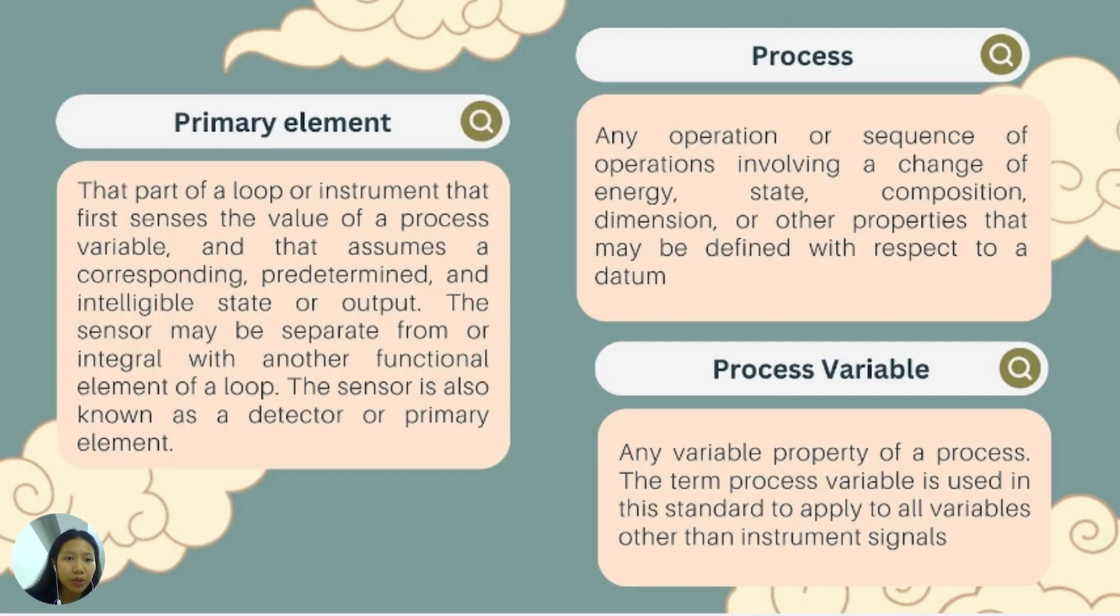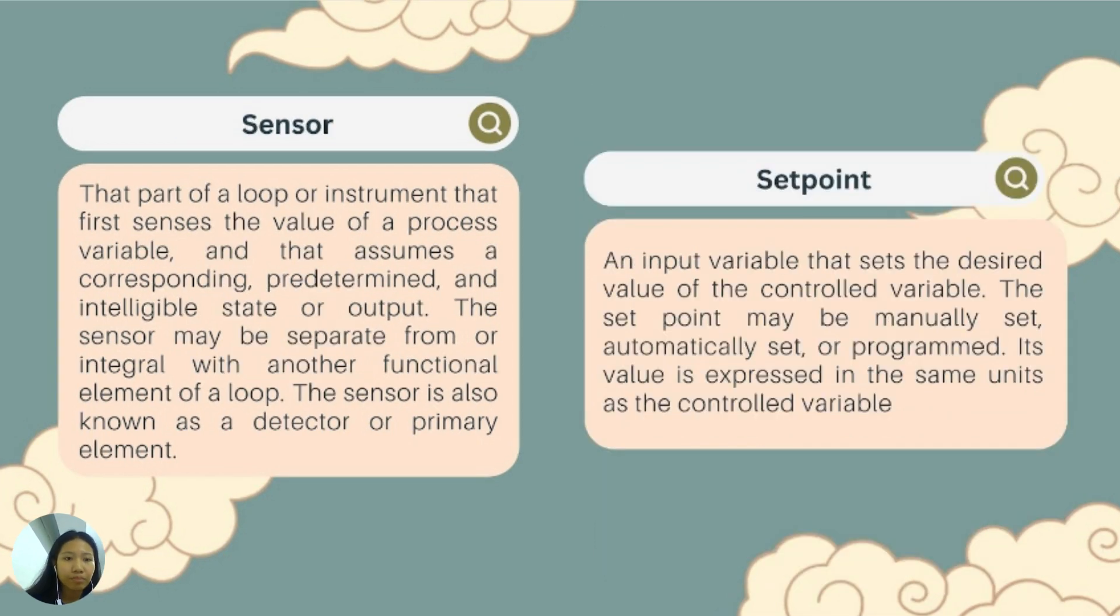Primary element. That part of a loop or instrument that first senses the value of a process variable and that assumes a corresponding, predetermined, and intelligible state or output. The sensor may be separate from or integral with another functional element of a loop. The sensor is also known as a detector or primary element. Process. Any operation or sequence of operations involving a change of energy, state, composition, dimension, or other properties that may be defined with respect to a datum. Process variable. Any variable property of a process. The term process variable is used in this standard to apply to all variables other than instrument signals.